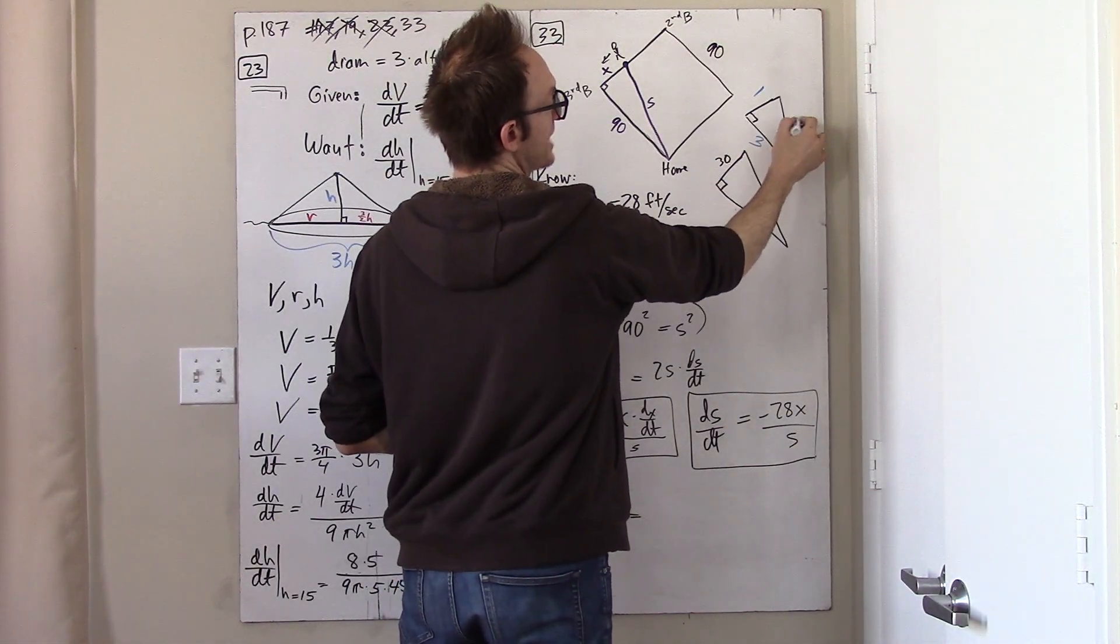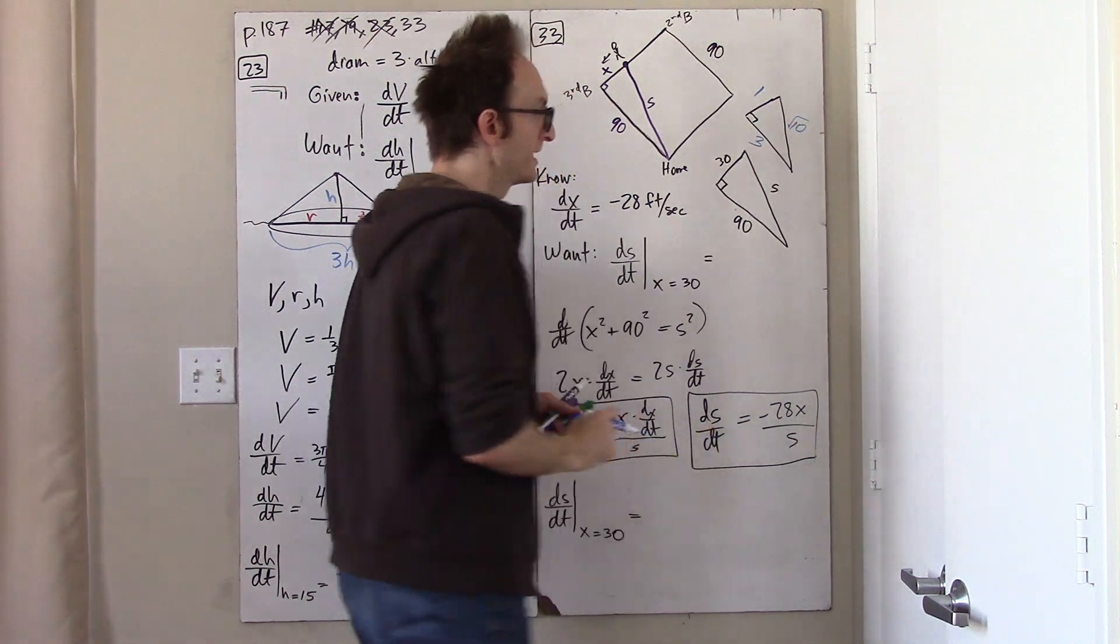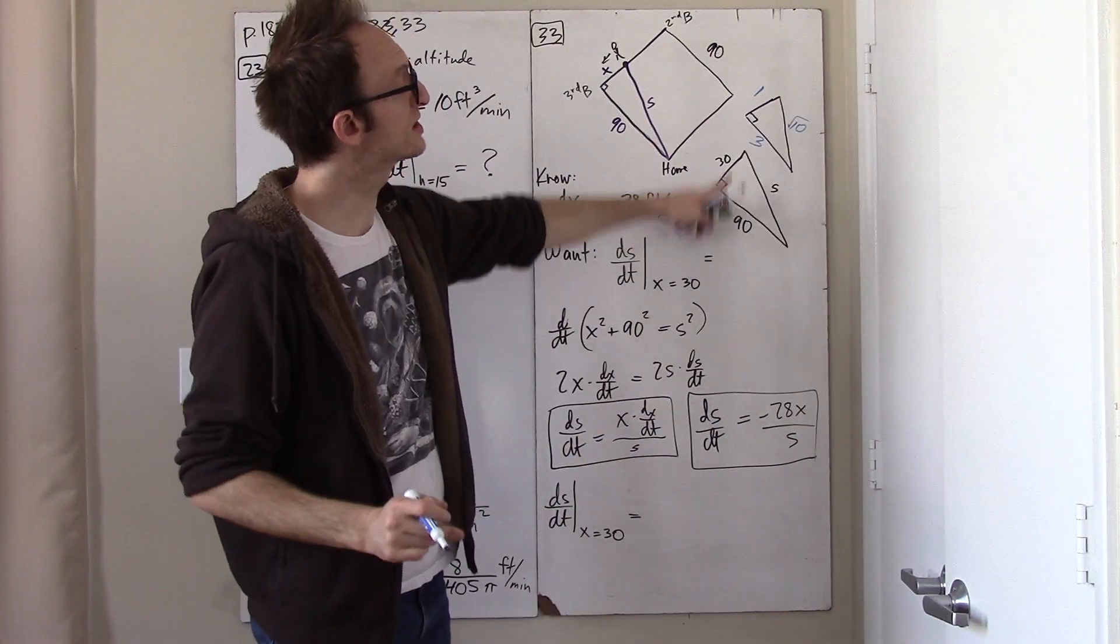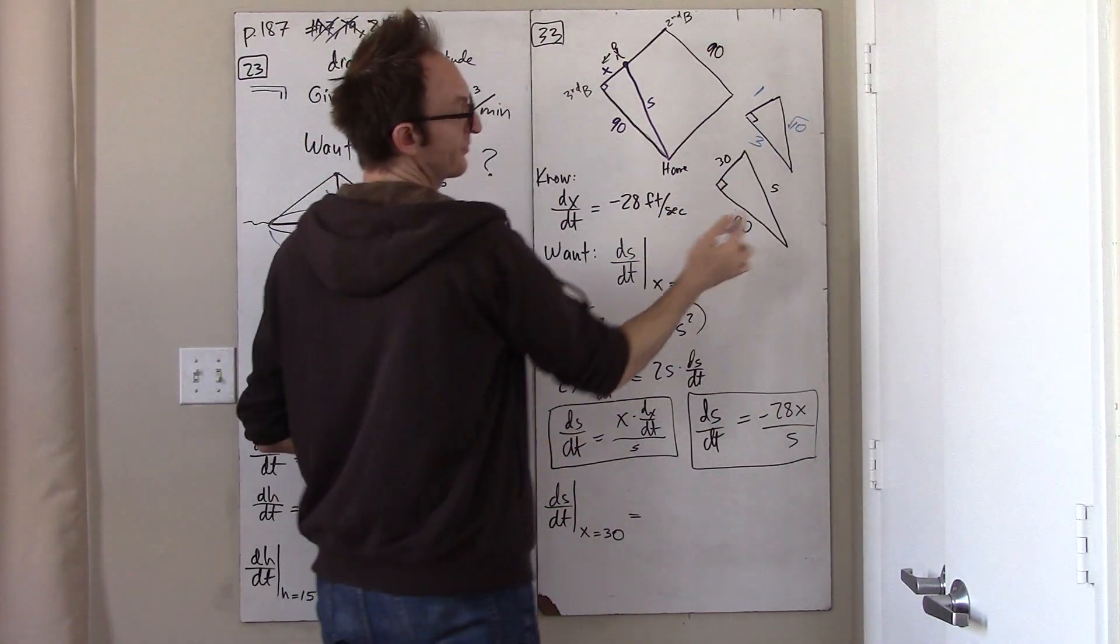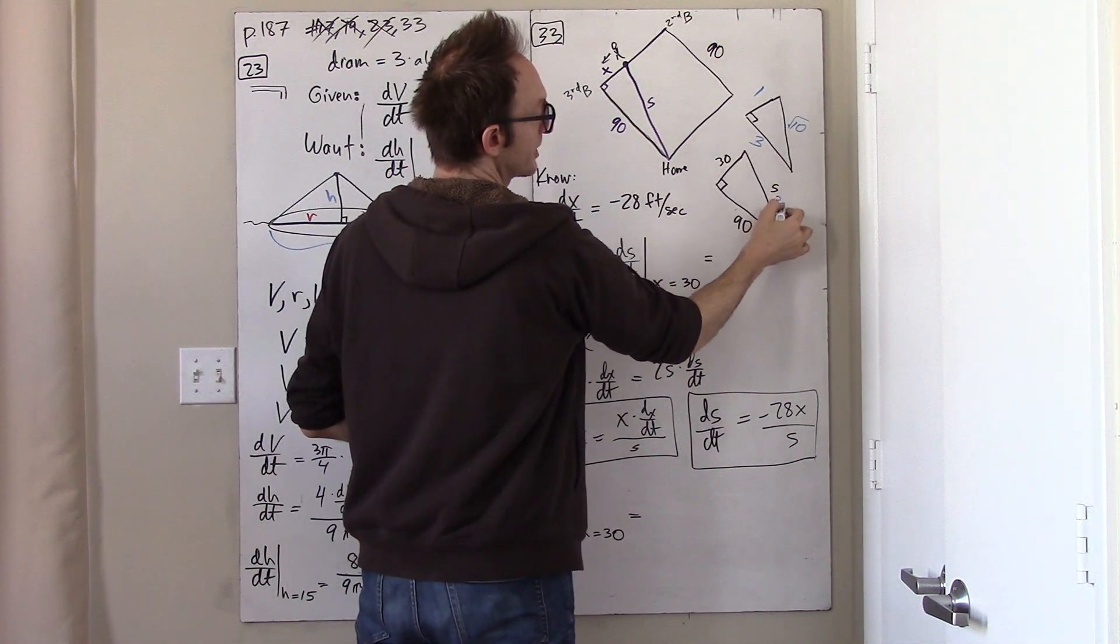Answer, it's root 10. So this triangle is just that triangle scaled by a factor of 30, and so this is just 30 root 10.